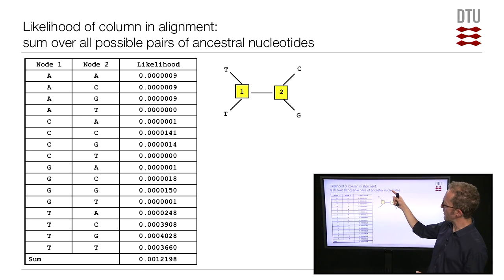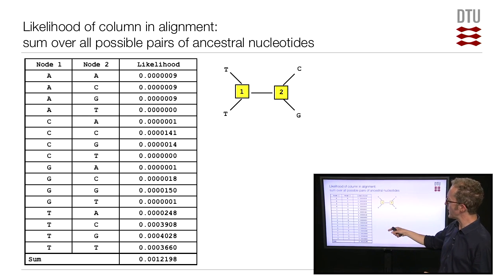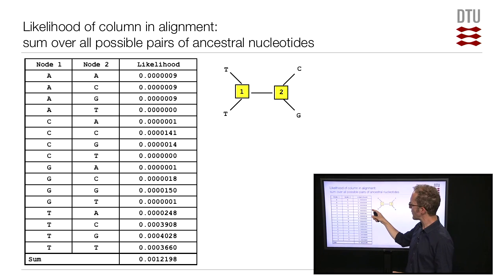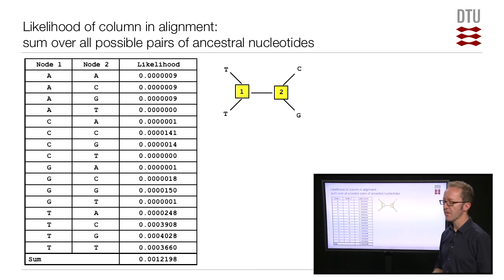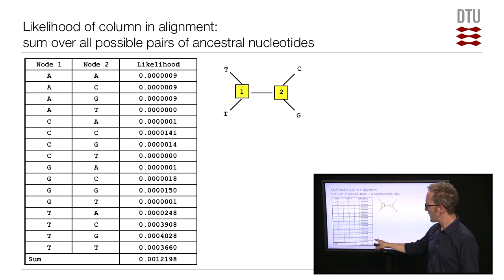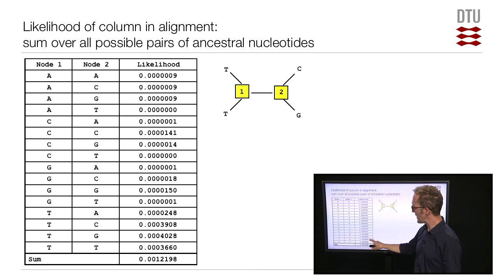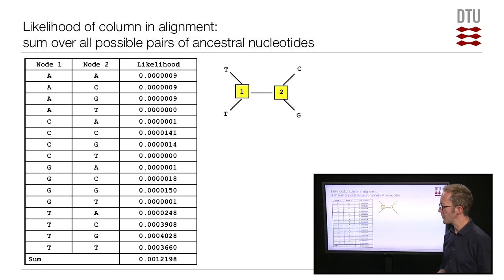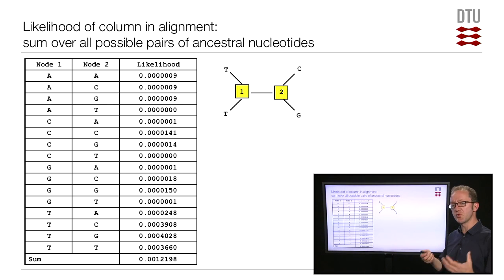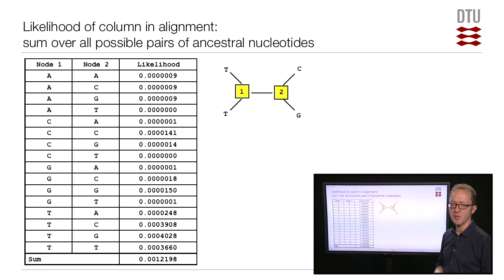If you compare the numbers here, you can see that it's much less likely that the two ancestral nucleotides were A and T than that they were, for instance, T and G. It's much, much more likely that these were the two ancestral nucleotides. These numbers can therefore be used to choose what you think the ancestral sequence looked like.